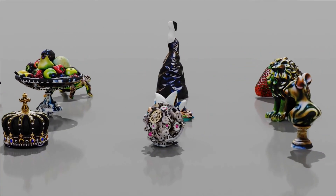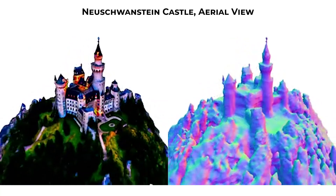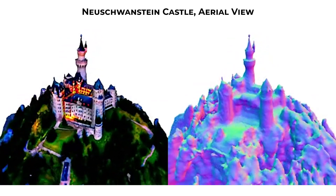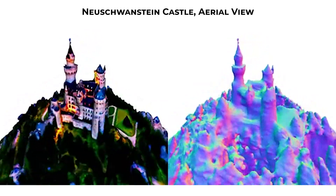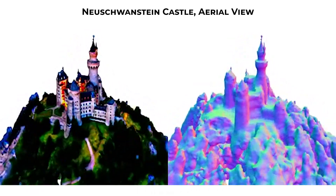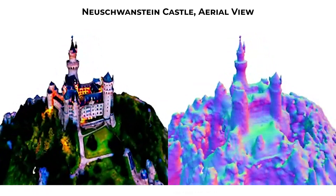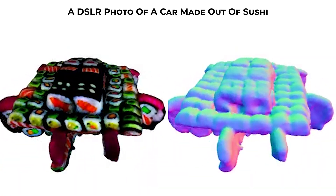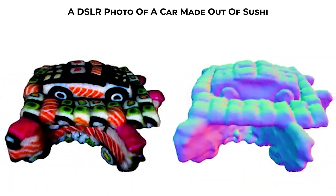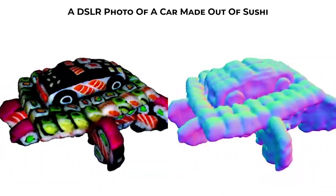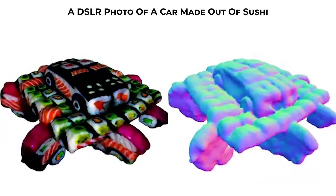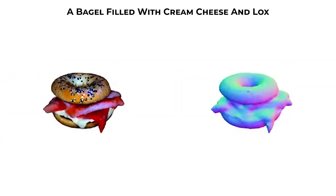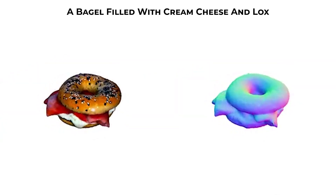I can't get enough of this AI — it's so cool. Let's take a look at a few more examples. First, we have a stunning recreation of the Neuschwanstein Castle in 3D — the detail here is remarkable. Next, we have a hilarious DSLR photo of a car made out of sushi. The possibilities with Magic 3D are endless.